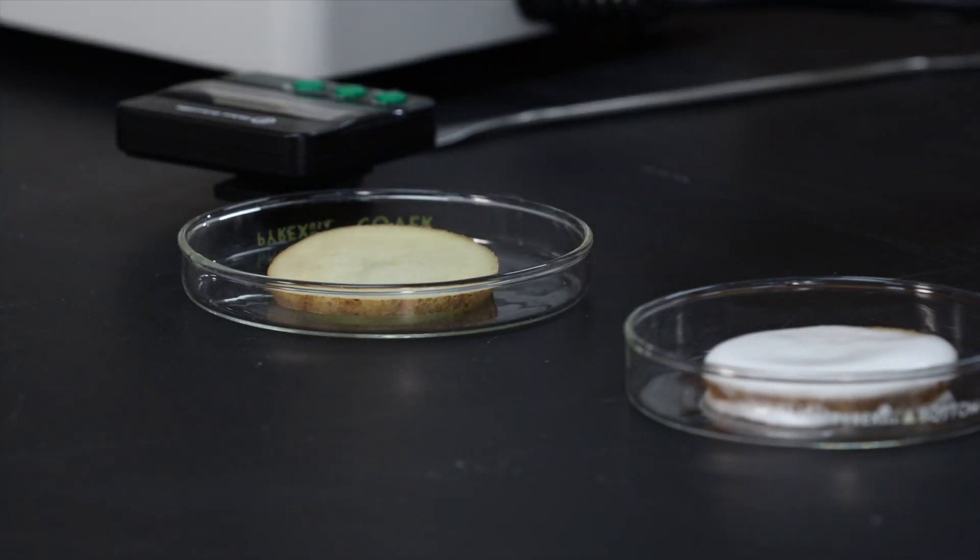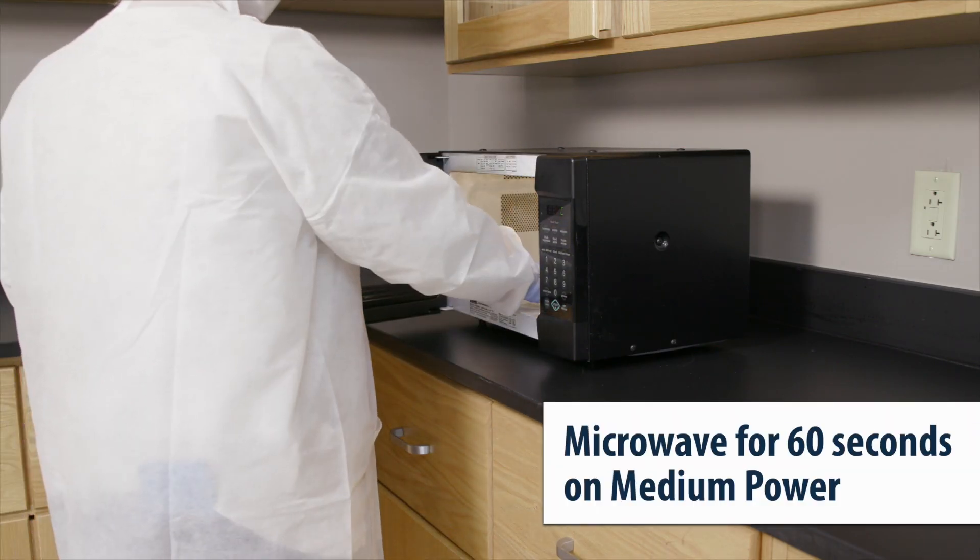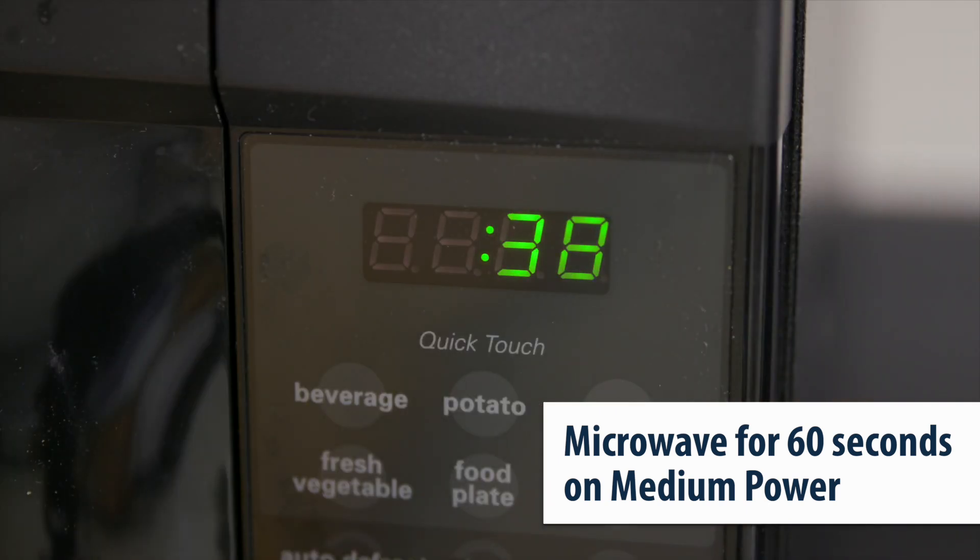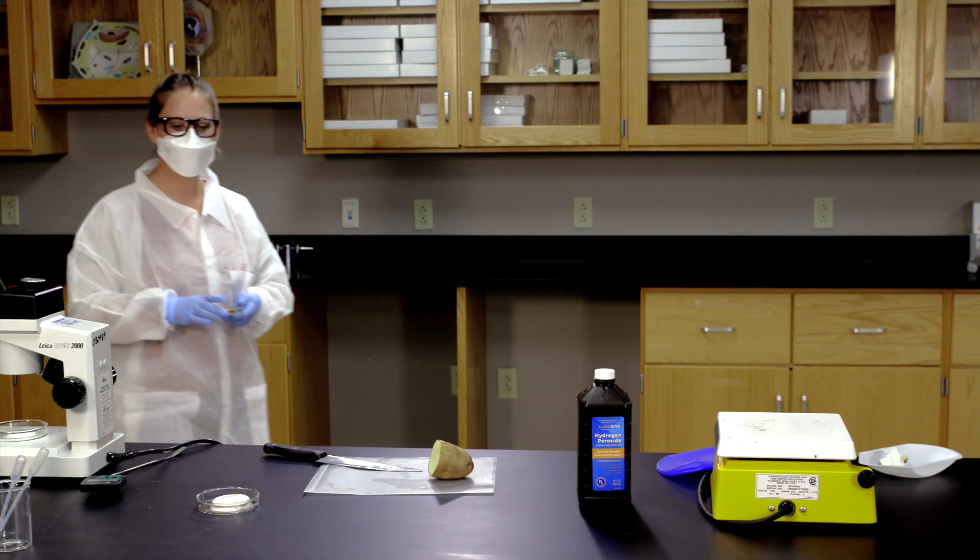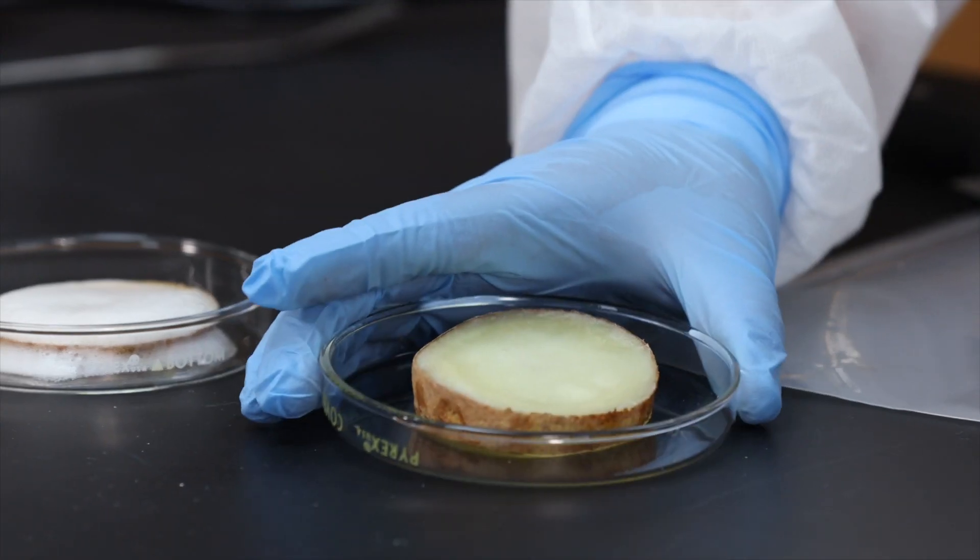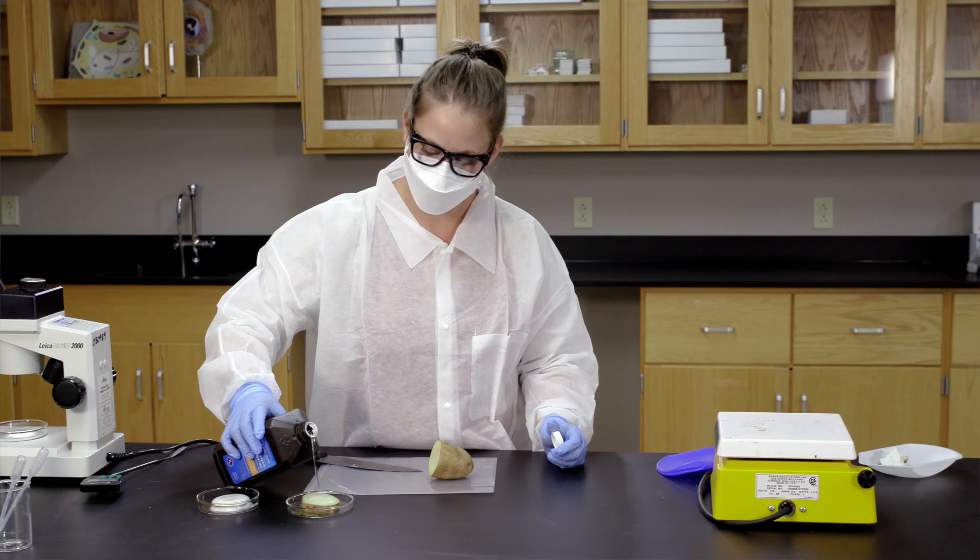Now, microwave a second slice of potato for 60 seconds at medium power. Pour hydrogen peroxide over the heated slice just like you did before.